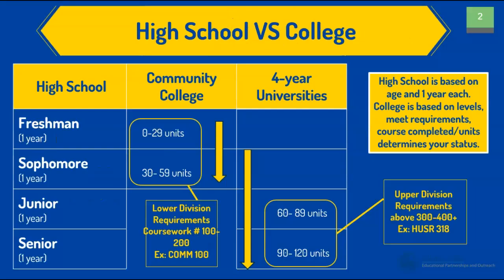The big difference between high school and college is you're not restricted by time. In high school, everyone is expected to take the same number of credits in advance based on the achievement of those credits to the next year. In higher education and college, you can go at your own pace. If you only want to take two classes a semester, you can do that.